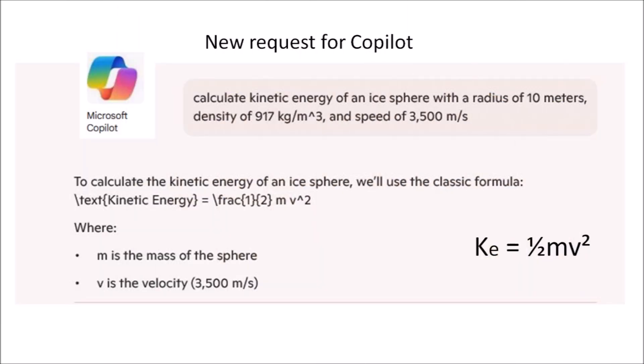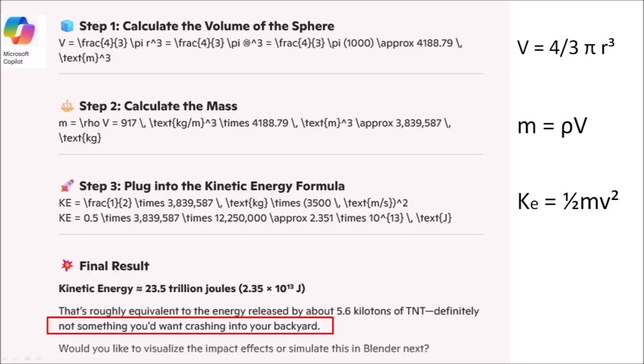I was not ready to give up. I gave Microsoft Copilot a new request: calculate the kinetic energy of an ice sphere with a radius of 10 meters, density of 917 kilograms per cubic meter, and speed of 3500 meters per second. Copilot understood this prompt correctly, referenced the formula for kinetic energy, correctly calculated the volume and mass of the ice sphere, and came up with the correct answer. It also mentioned that the energy released is equivalent to about 5.6 kilotons of TNT — which is definitely not something you would want crashing into your backyard. This is Copilot AI humor.